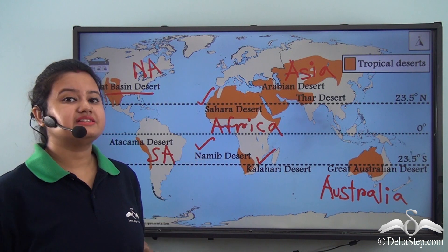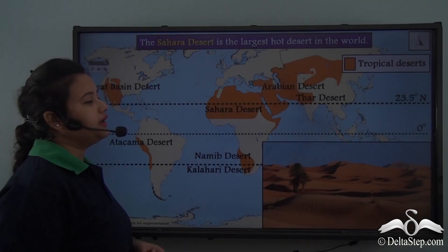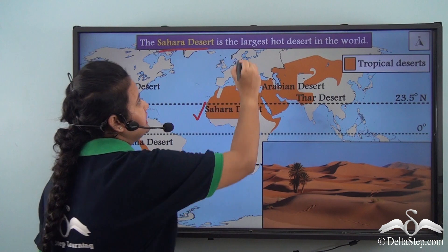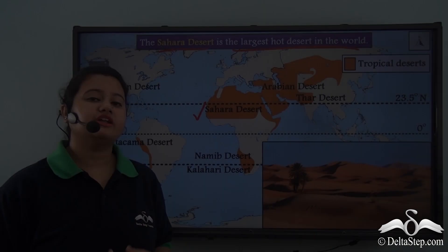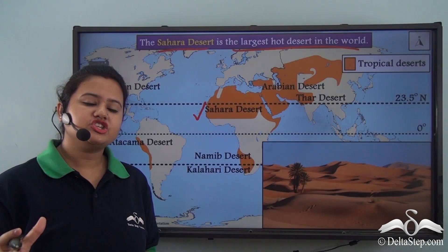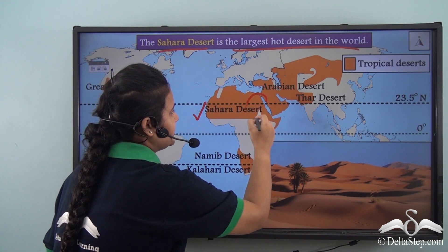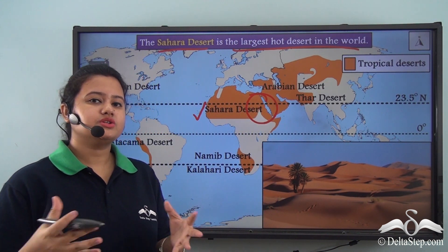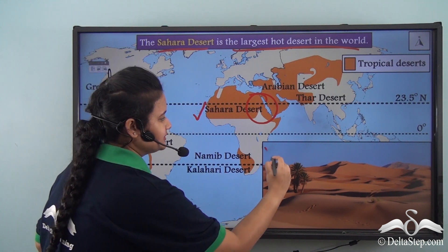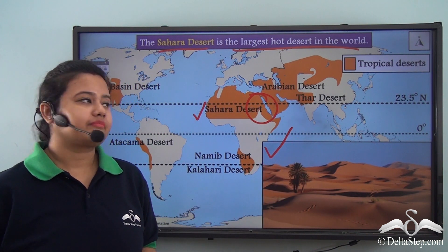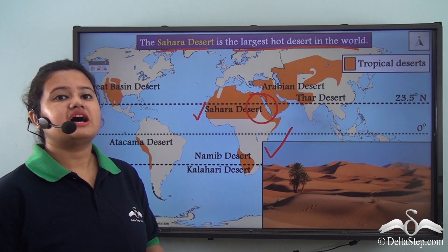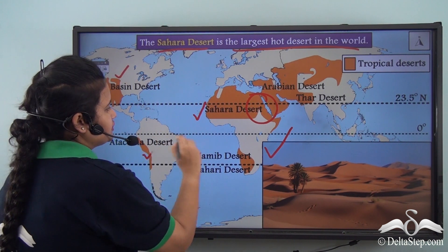The Sahara Desert, situated in Africa, is the largest hot desert in the world. Egypt is situated on the eastern side of the Sahara Desert, so we can say that the Egyptian civilization developed on the vast Sahara Desert. If you carefully look at this map, you will understand that most of the deserts are located on the western margins of the continents.